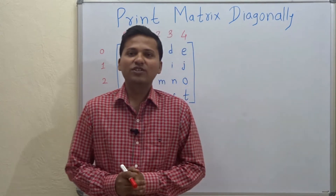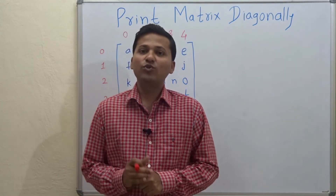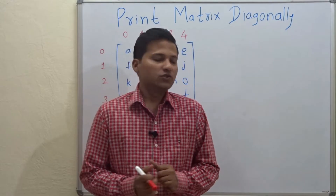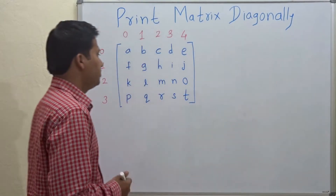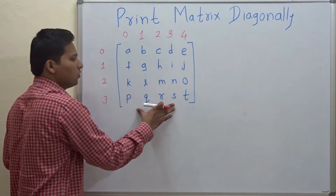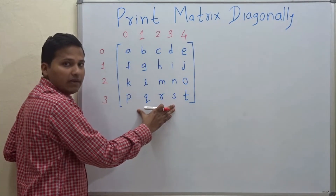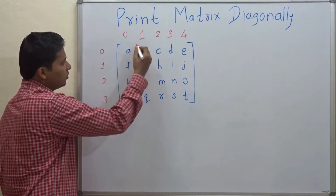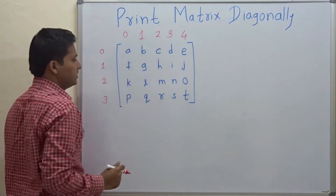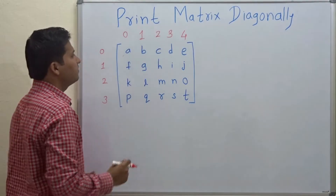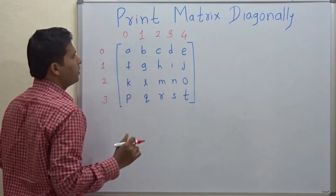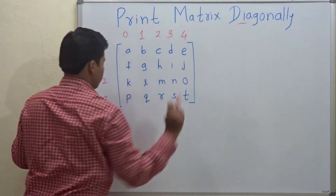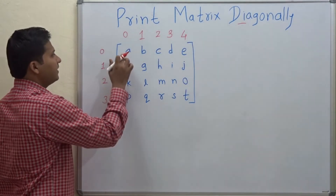Hello friends, today we are going to see how to print a matrix diagonally. So let's see what it means. We have to print all the diagonals of the matrix, that means we have to print the elements of the matrix diagonally.